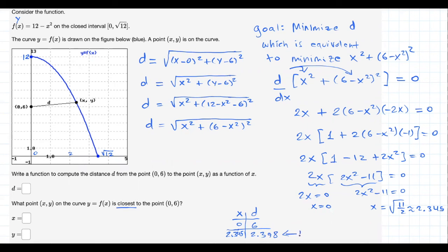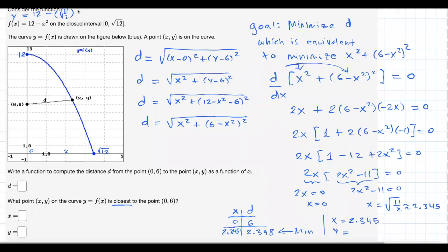Comparing these two, clearly this is the minimum value. Which means that then, as a conclusion, when x is equal to 2.345 and y equals, notice if I have x, I have y, right? For x equal to 2.345, y will be equal to 12 minus, I just got to substitute the value of x. Let me do it in exact form.